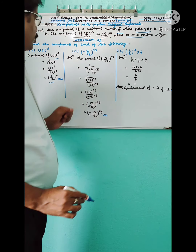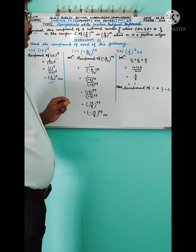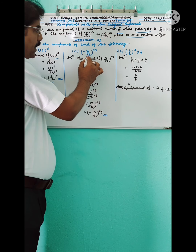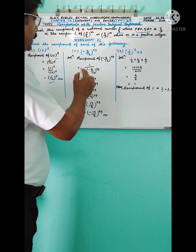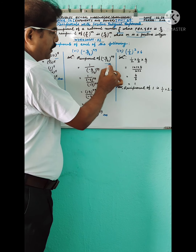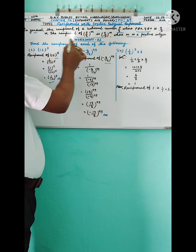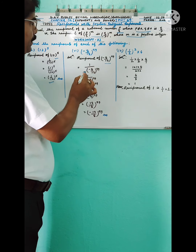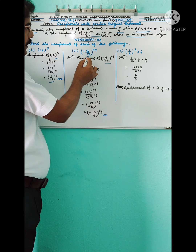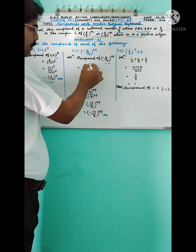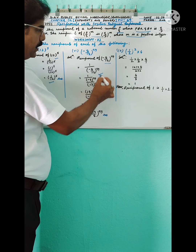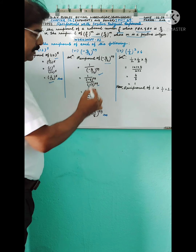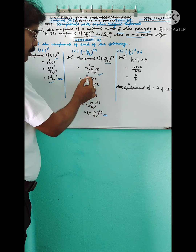Questions 2 through 5 you can solve similarly. Now I will solve question number 6: find the reciprocal of (−8/13) to the power 99. Since the reciprocal of (p/q) to the power m is (q/p) to the power m, the reciprocal of (−8/13) to the power 99 is 1 divided by (−8/13) to the power 99, which equals 1 divided by [(−8)^99 / 13^99].